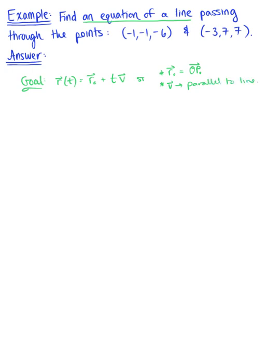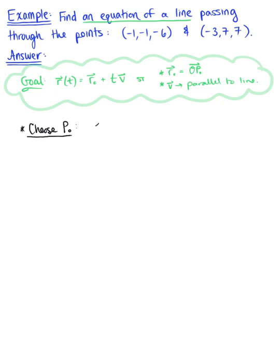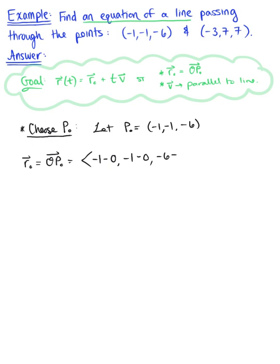So with this in mind, let's go ahead and find an equation of the line. The first thing we need to do is choose a point — both work. So I'm going to let p-naught be the first point: negative 1, negative 1, negative 6. The position vector r-naught is the vector from the origin to p-naught, so we have terminal minus initial: negative 1 minus 0, negative 1 minus 0, negative 6 minus 0. So our position vector is the vector negative 1, negative 1, negative 6.